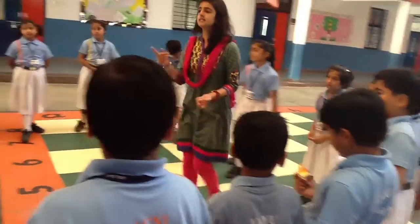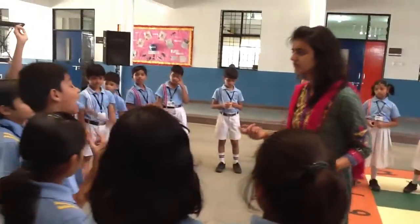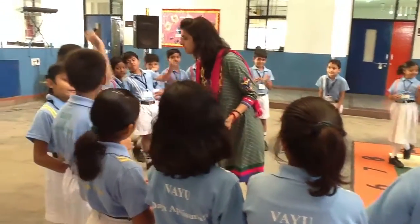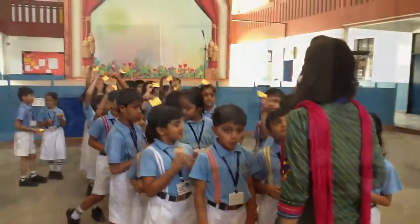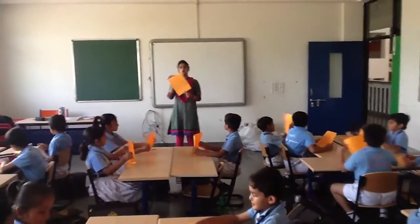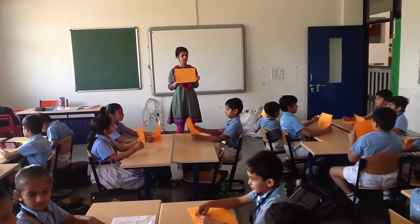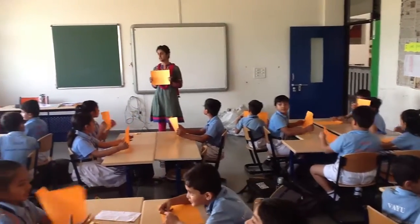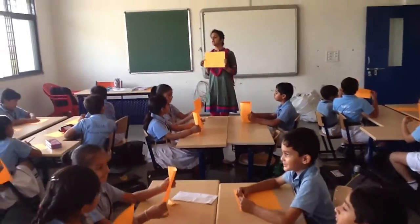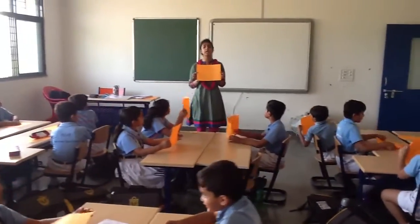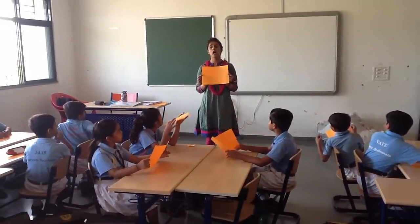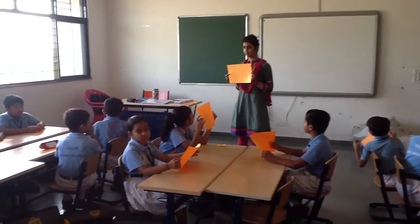Any confusion? What you have to do is, listen to me, let me finish. What you have to do is, you have to make 3 equal parts of the paper. You do not have to tear the paper, you just have to fold the paper. Okay?